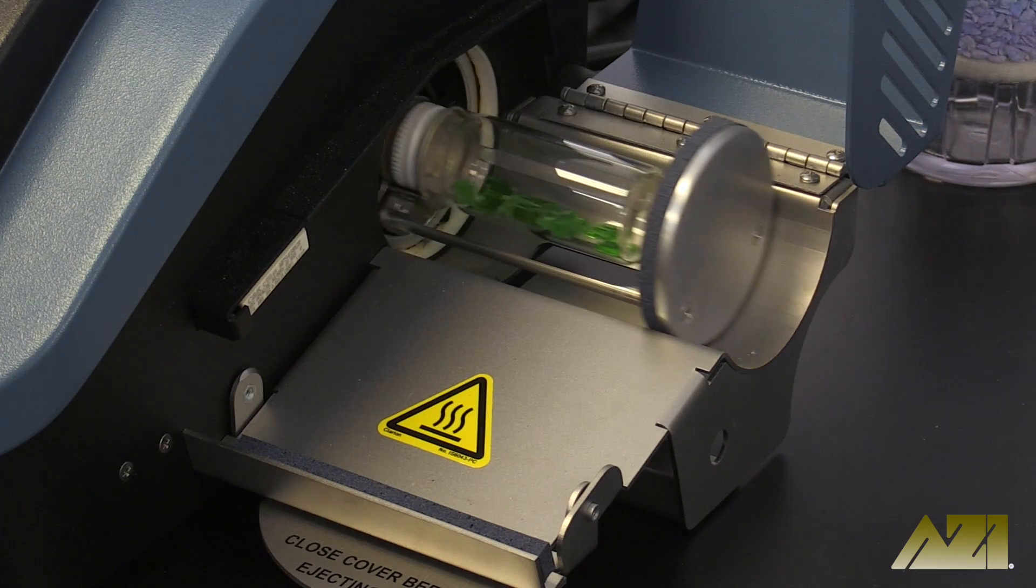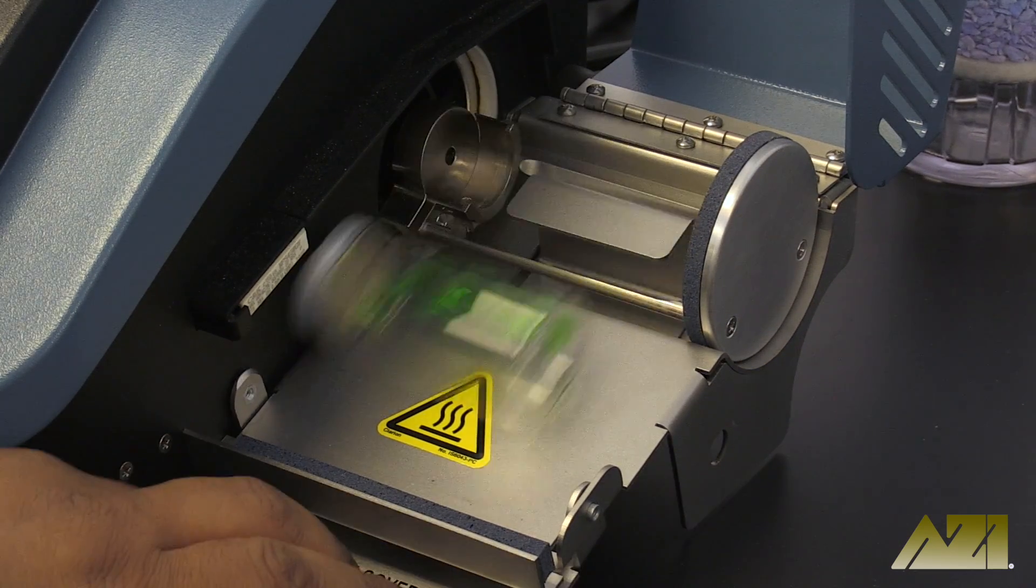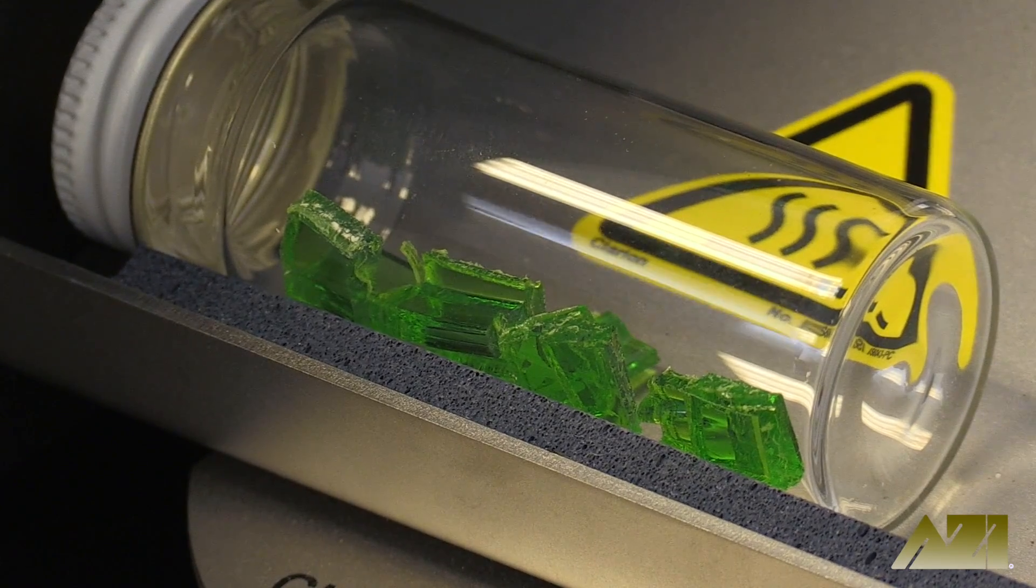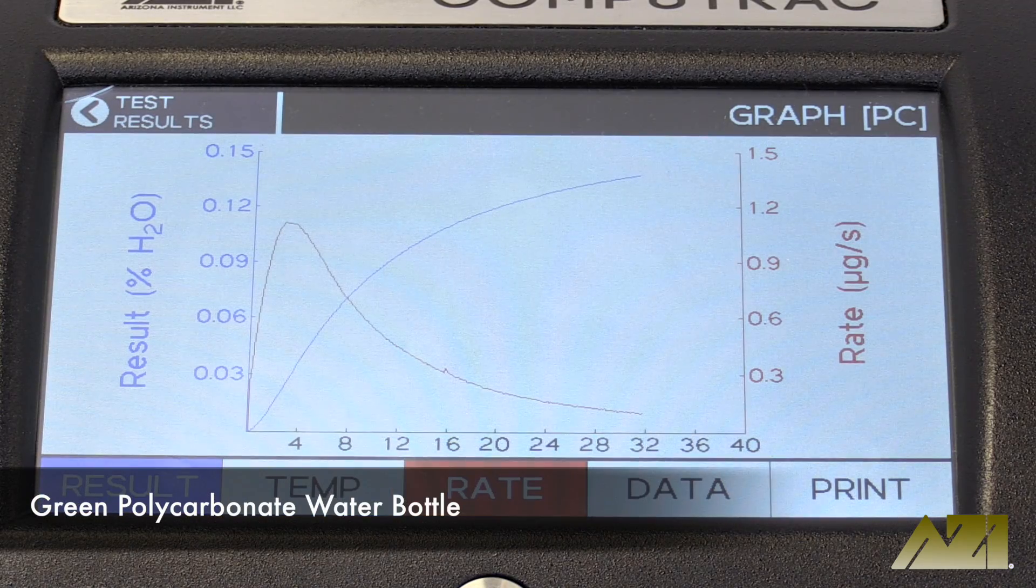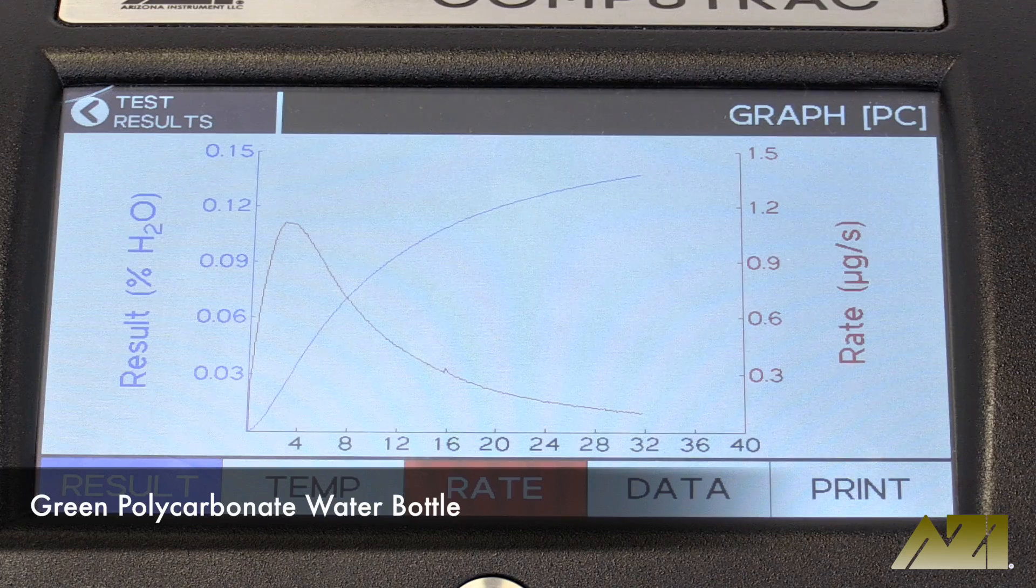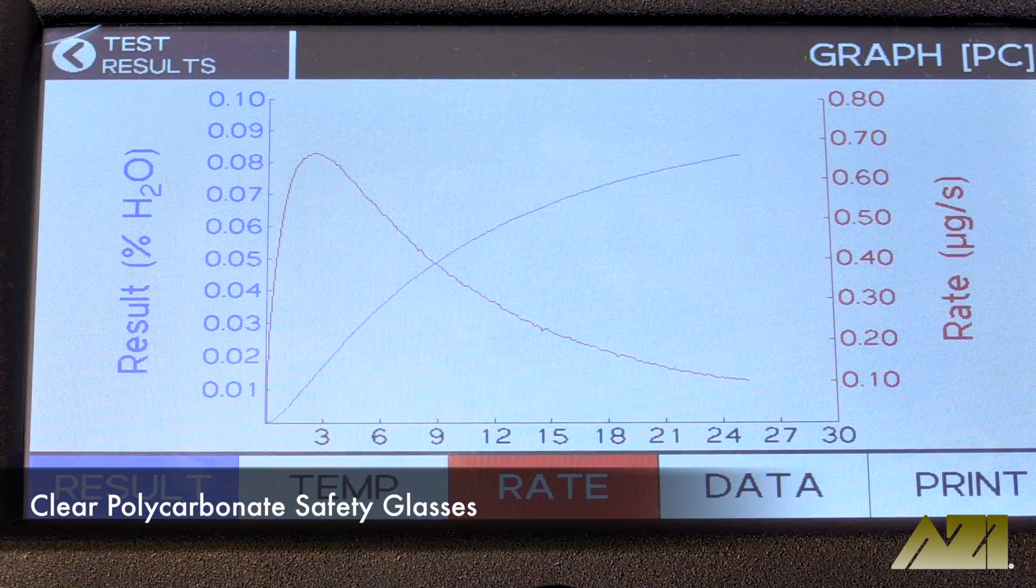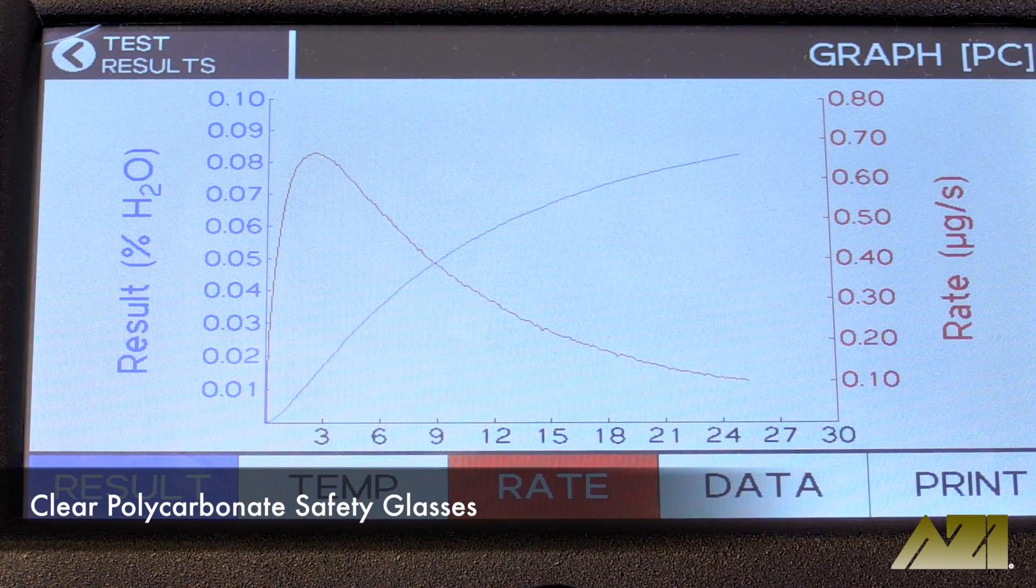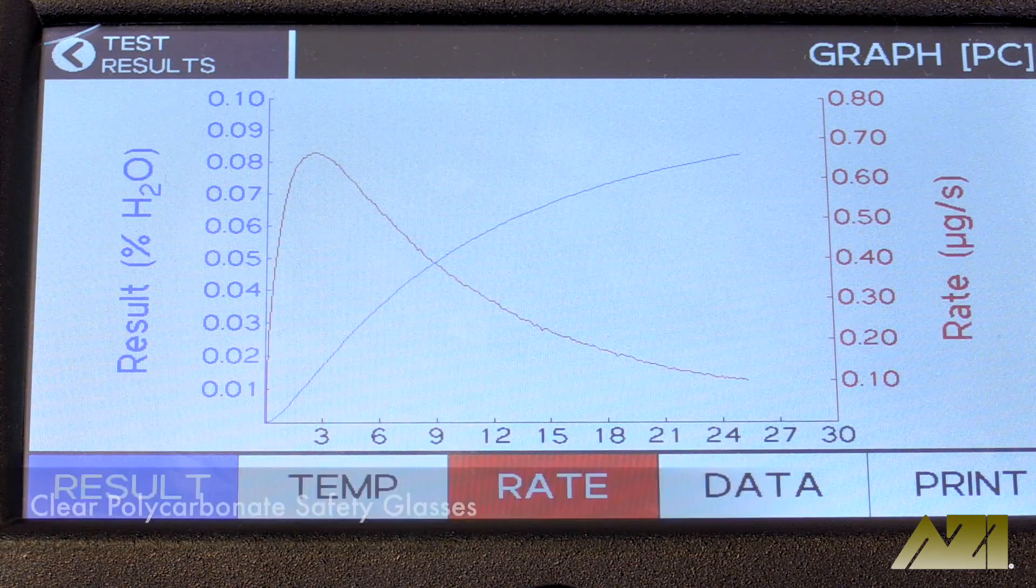Too little moisture can cause clogging and production delays, so those lovely glasses may not make it out of production at all. Too little moisture can also cause the final product to be brittle. So you see, moisture really is essential to the production of polycarbonate products.